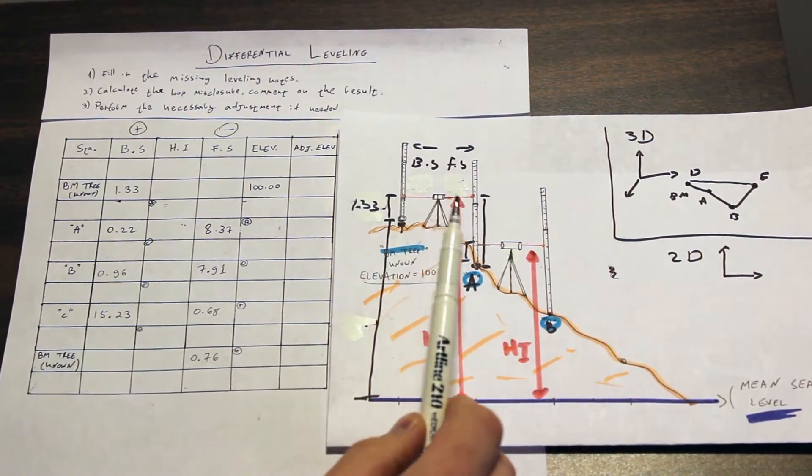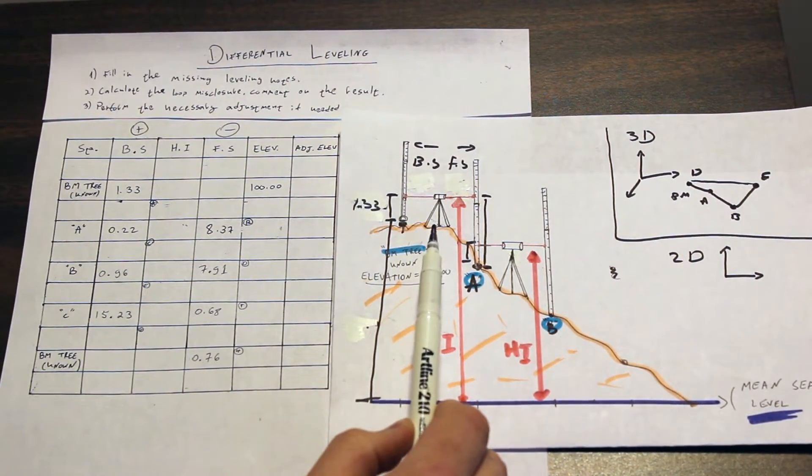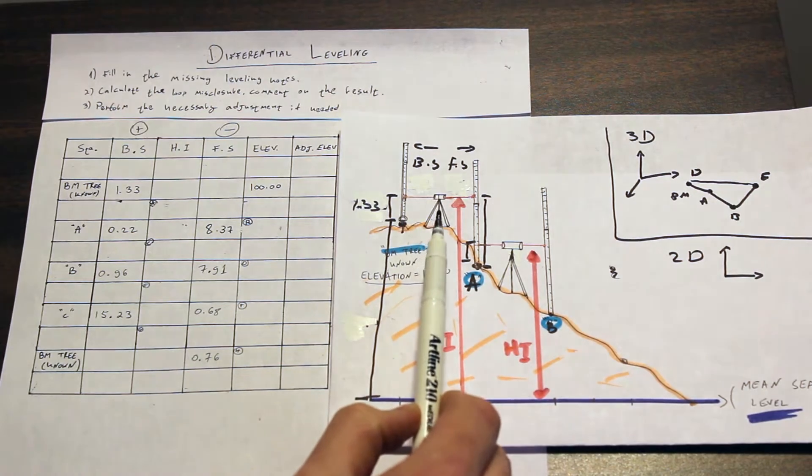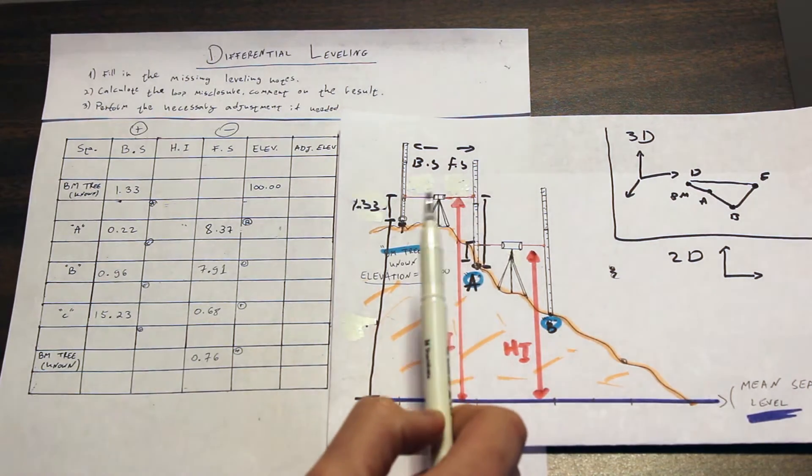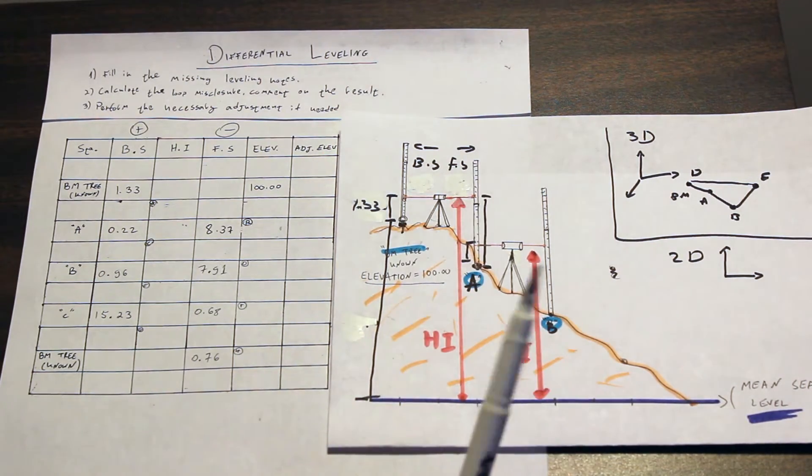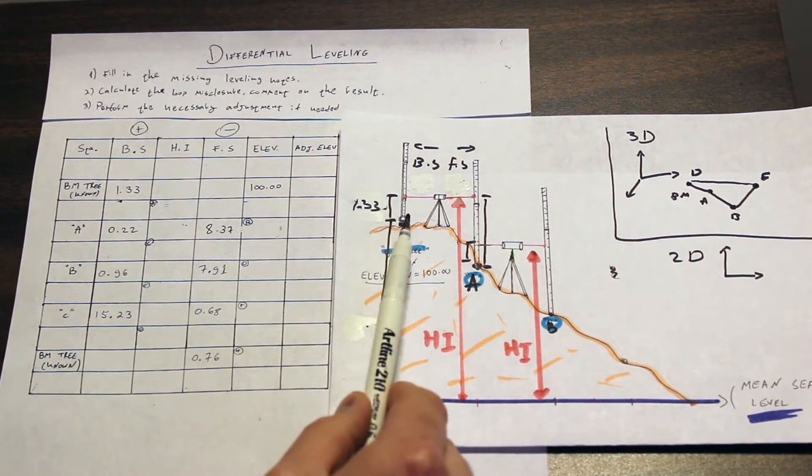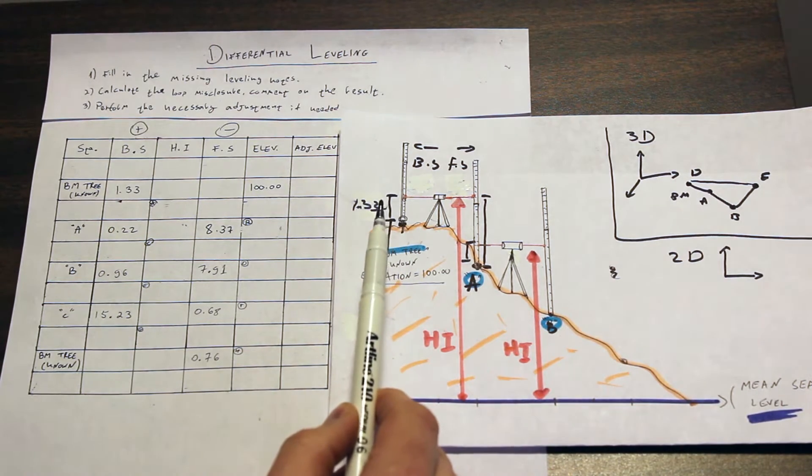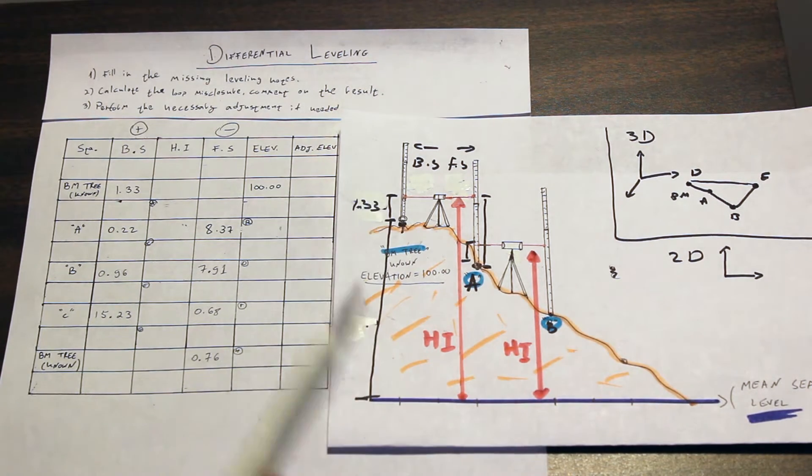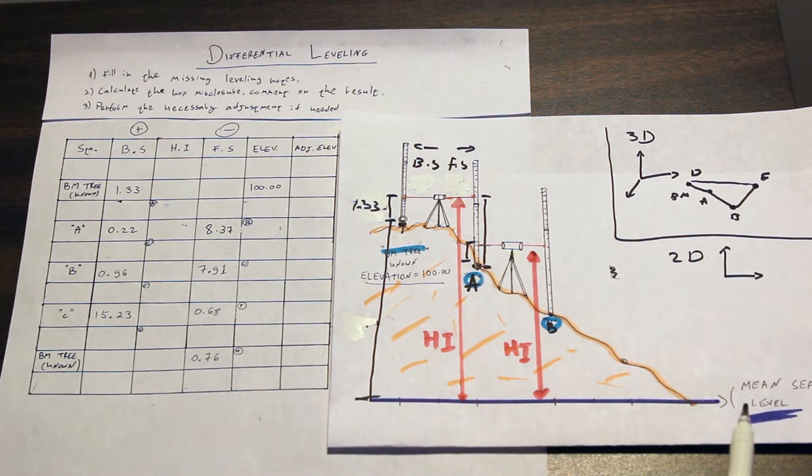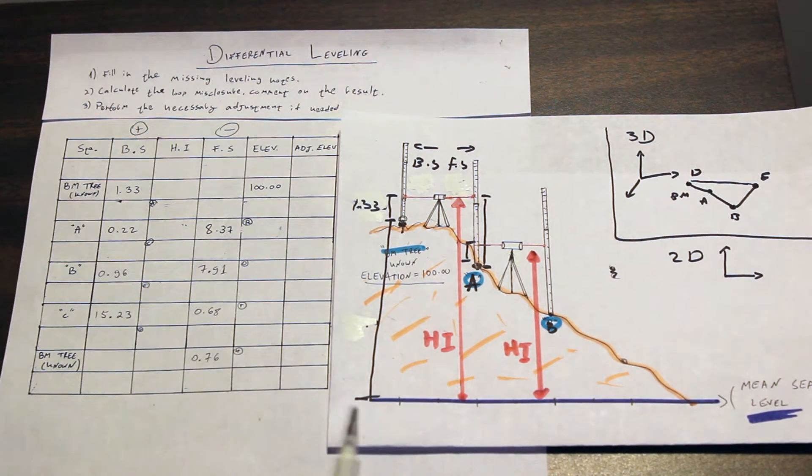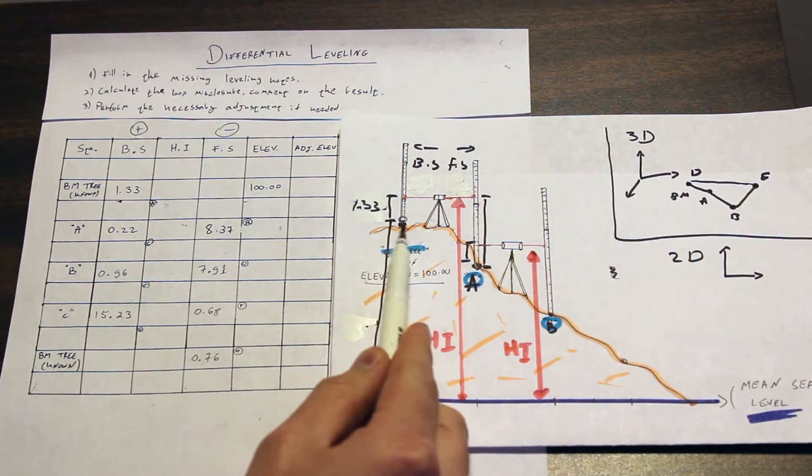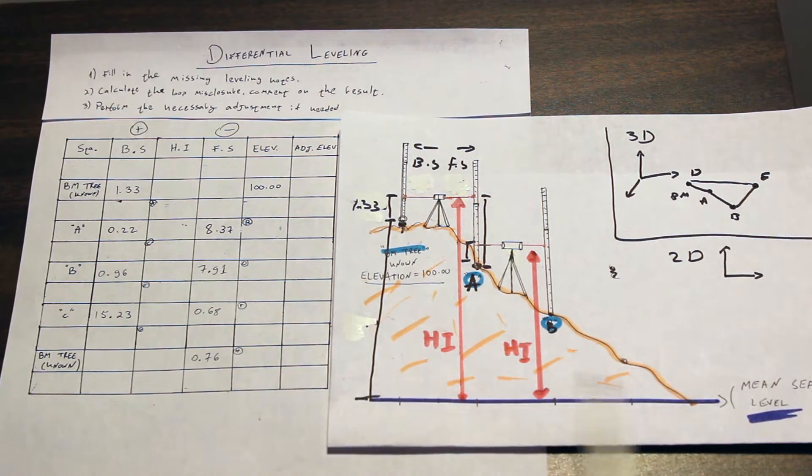Imagine we're standing on the top of the mountain, we're taking out the automatic leveling device, we have someone holding the rods, and we're starting to shoot. The first point is the benchmark. The benchmark is a known point of elevation, and that's basically the point that we know where we're standing compared to the mean sea level. I chose an easy number so you'll understand the mathematics here. Let's say that we are standing 100 meters above mean sea level.